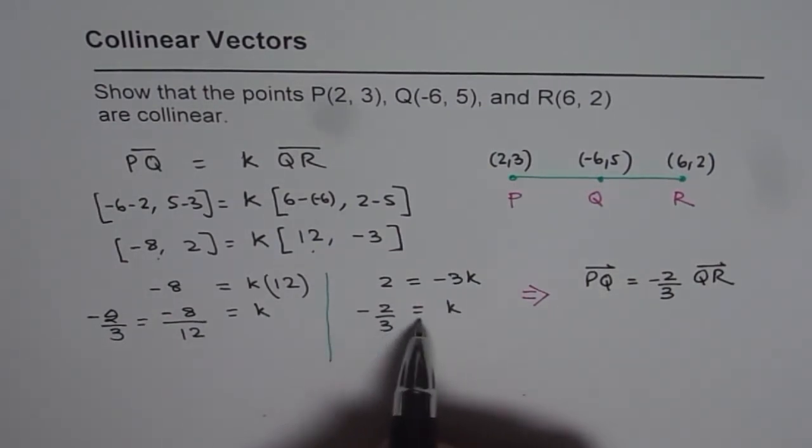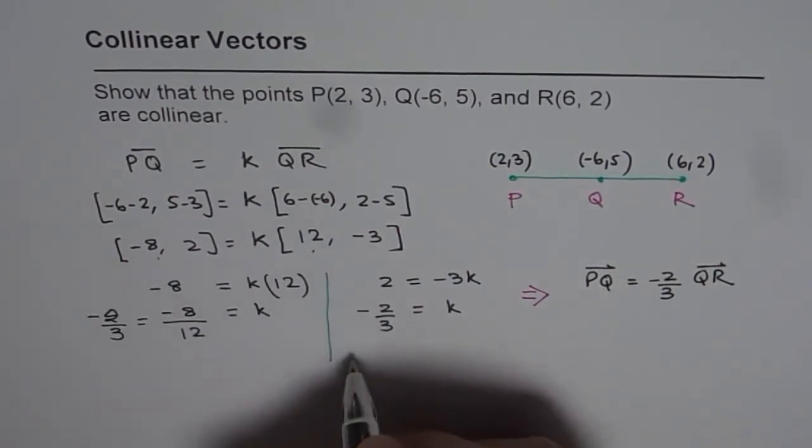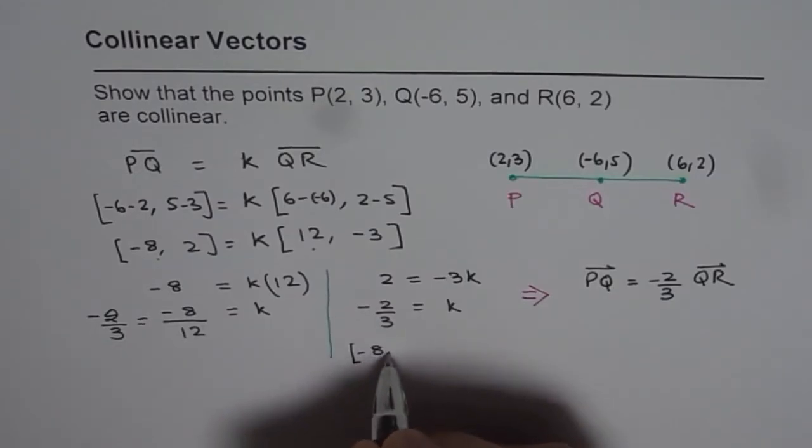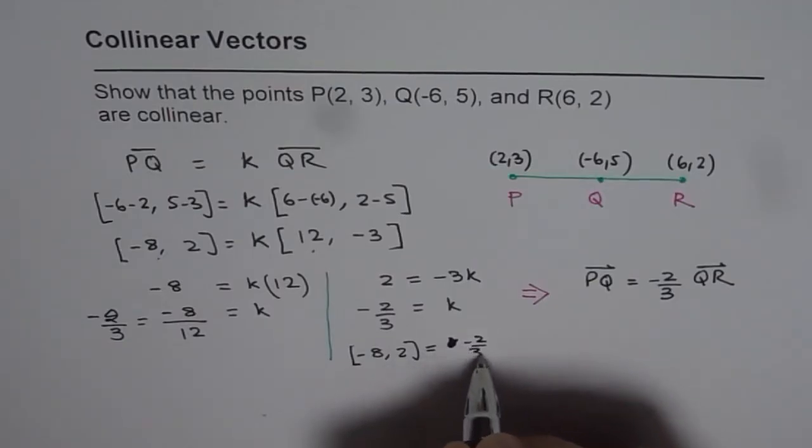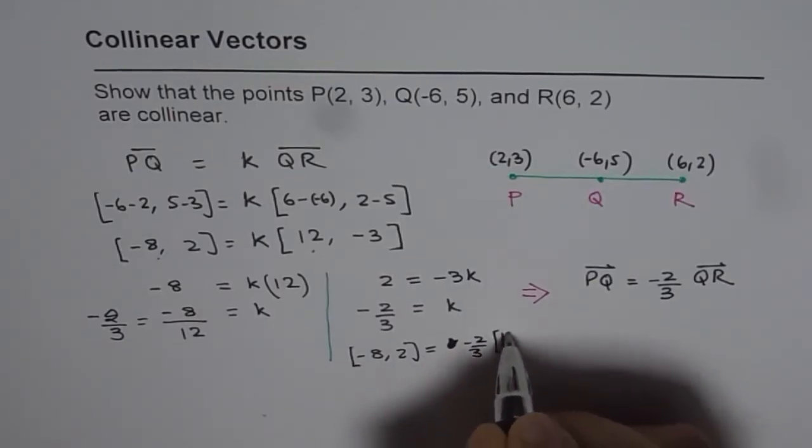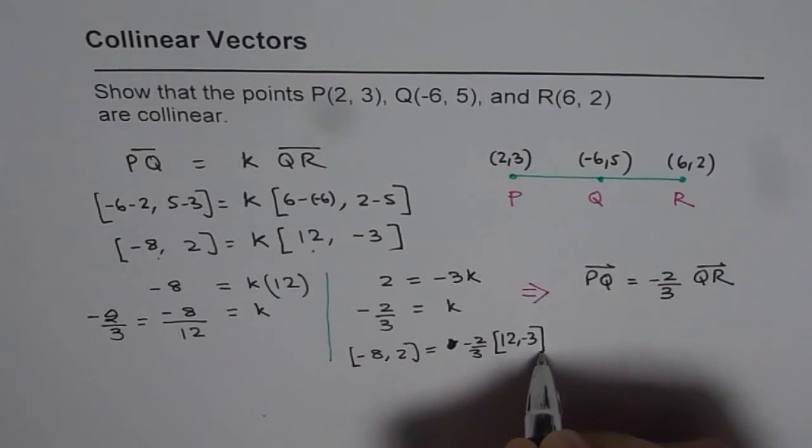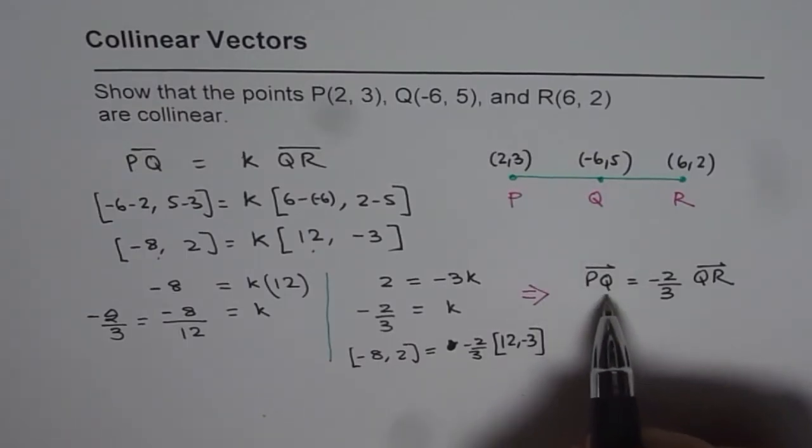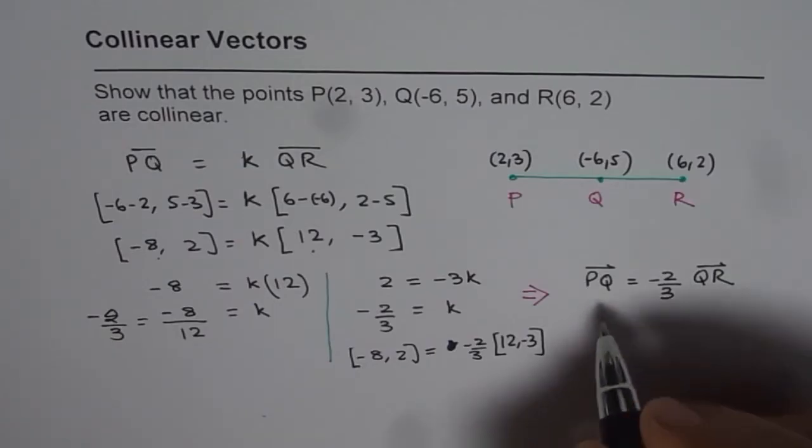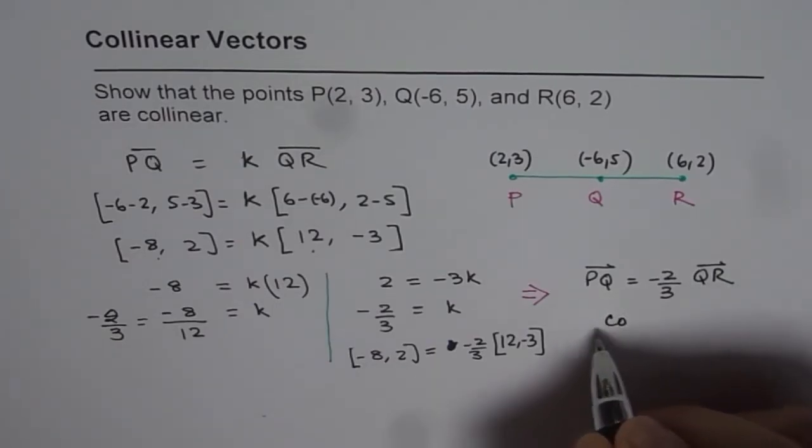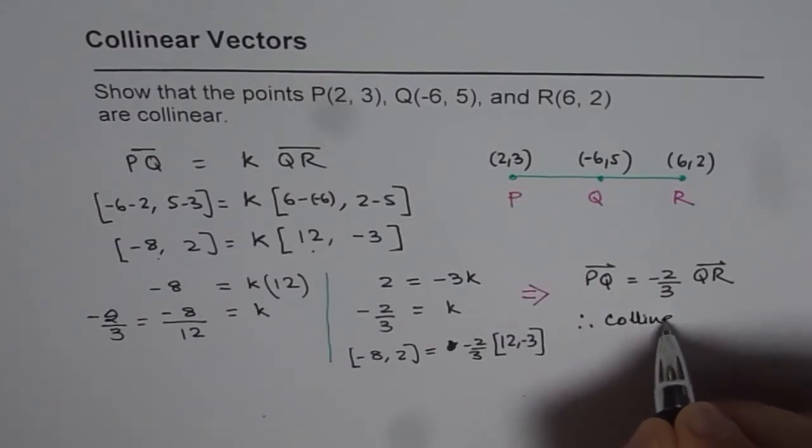Since K is minus 2 over 3, I could have written this equation as minus 8, 2 equals to K, which is, let me write now minus 2 over 3, times 12 minus 3. So that implies that PQ equals to minus 2 over 3 of QR. And therefore they are collinear. Scalar multiple.